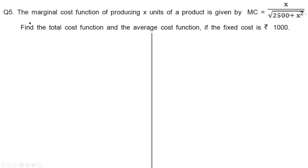Next question: the marginal cost function of producing x units of a product is marginal cost equals x by root of (2500 plus x squared). Find the total cost function and the average cost function if the fixed cost is rupees 1000. Here the fixed cost is rupees 1000, meaning when x is 0 the total cost is 1000, and we can use that to find the constant of integration.